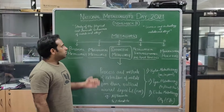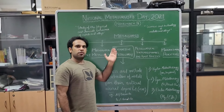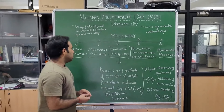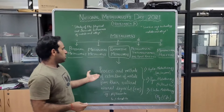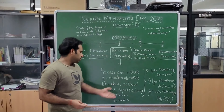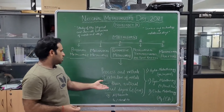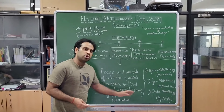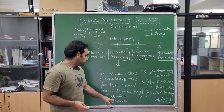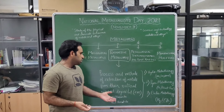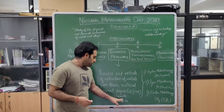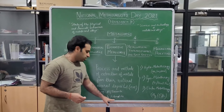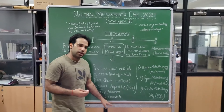Now we will understand another classification of metallurgy — extractive metallurgy — which involves the processes and methods of extraction of metals from their natural mineral deposits, or ore. For example, aluminium is extracted from its ore bauxite, and iron (Fe) is extracted from hematite.